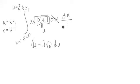So it looks like we get the integral from 1 to 2 of u minus 1 quantity times square root of u du. Now, let's just look at this for a minute.